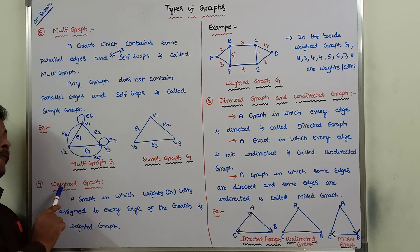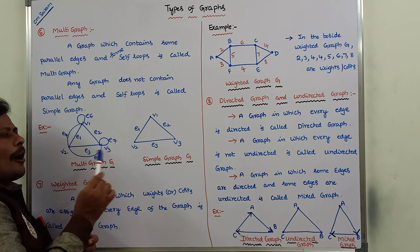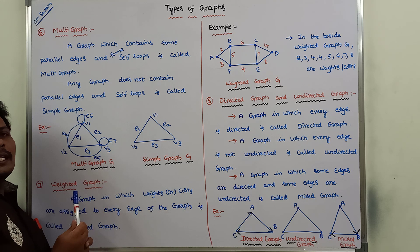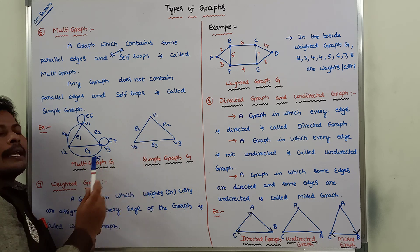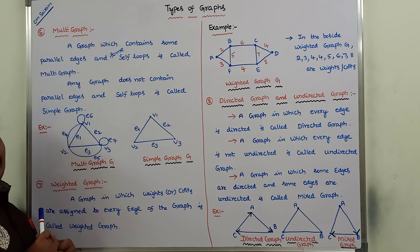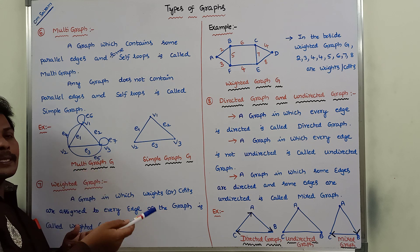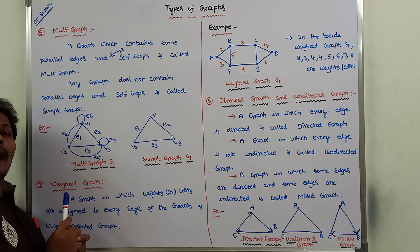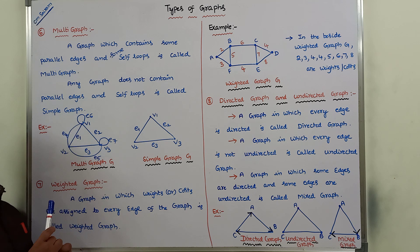Next, we go to weighted graph. Weighted graph means: suppose we take some graph, and we have to assign some weights to the edges. Every edge has a particular positive weight. Then that graph is called as weighted graph.